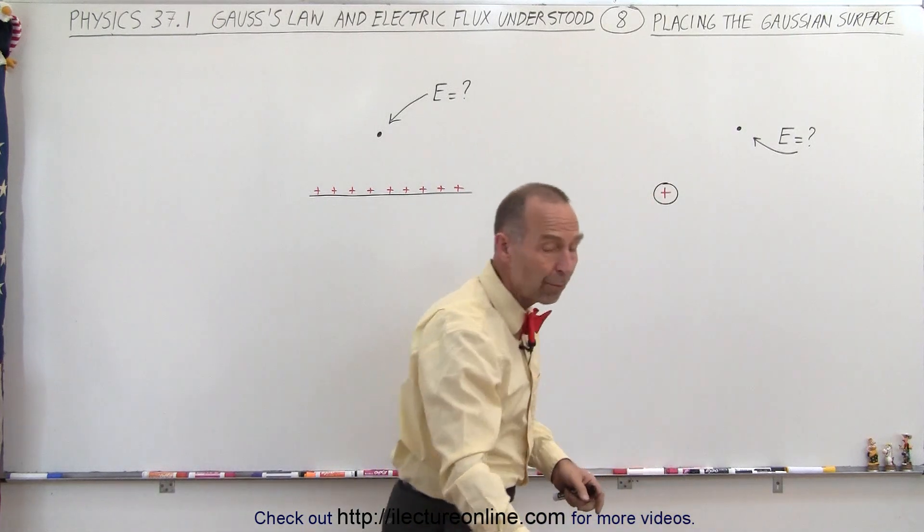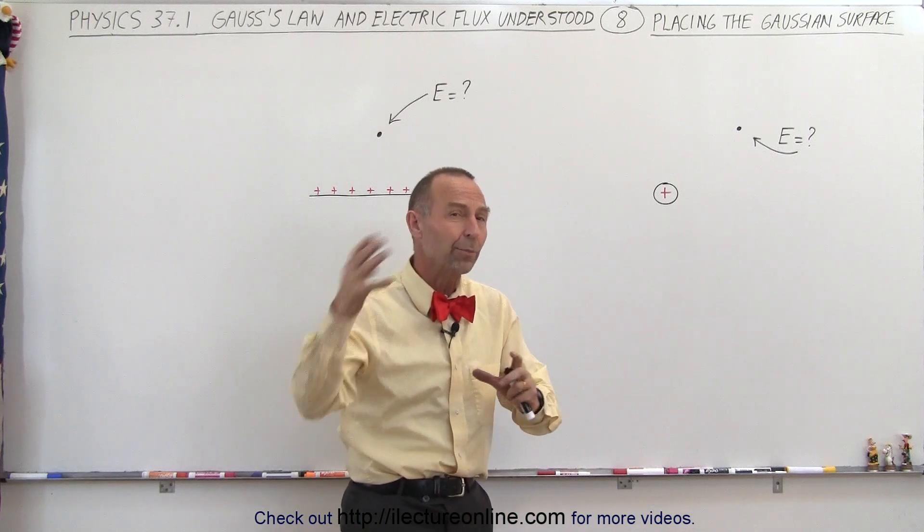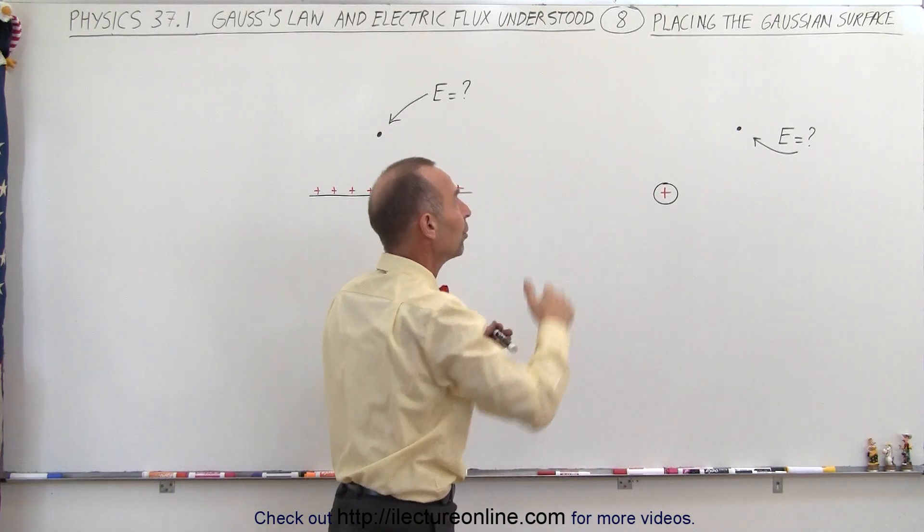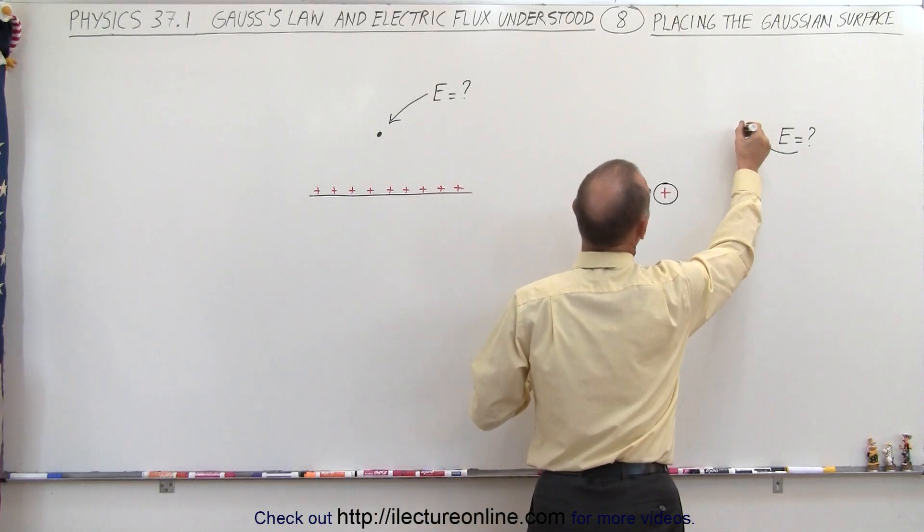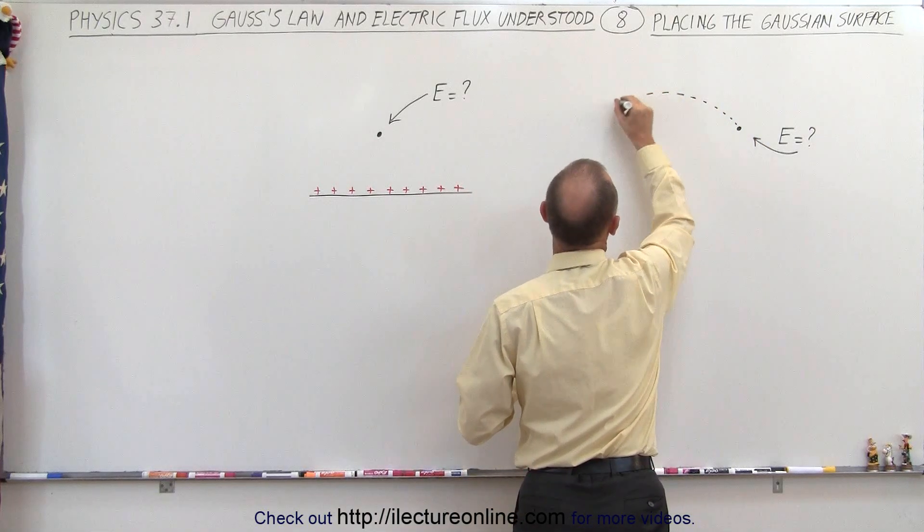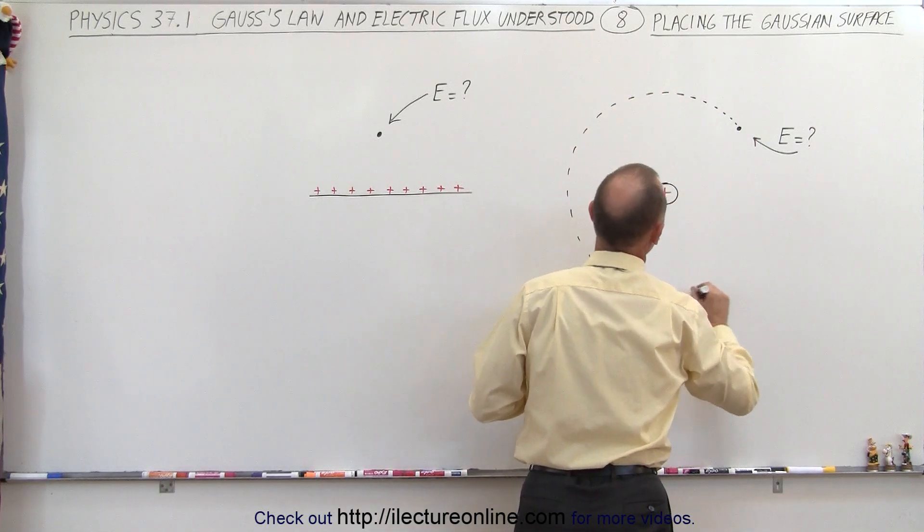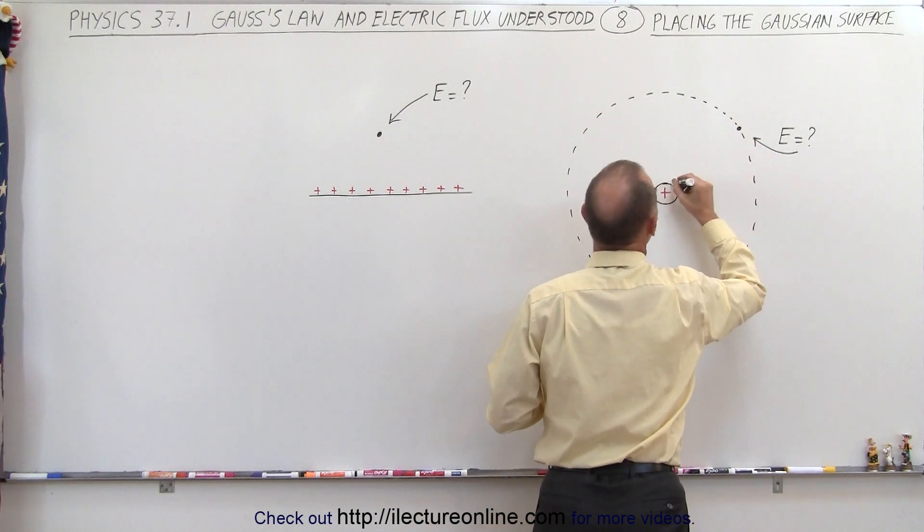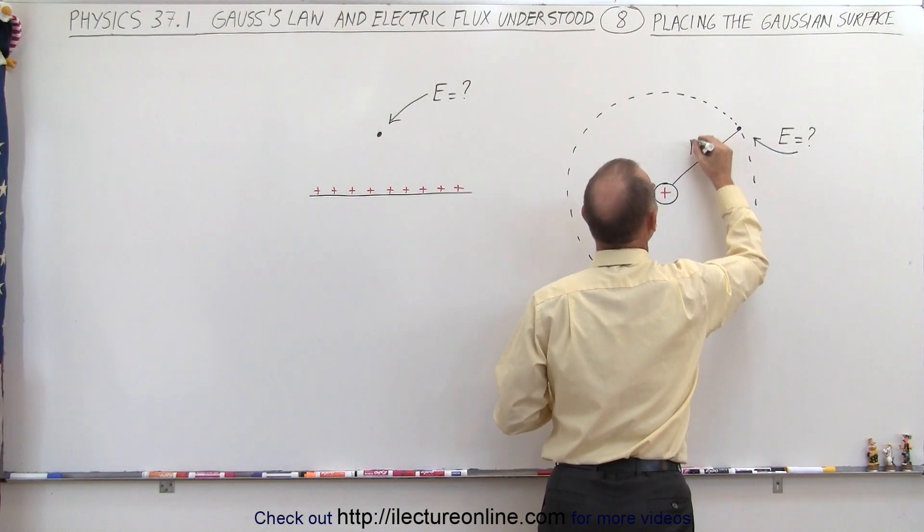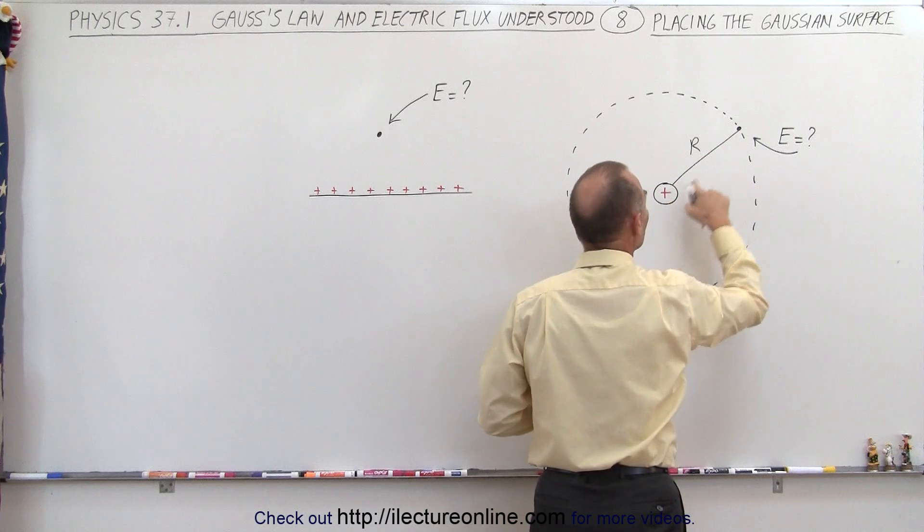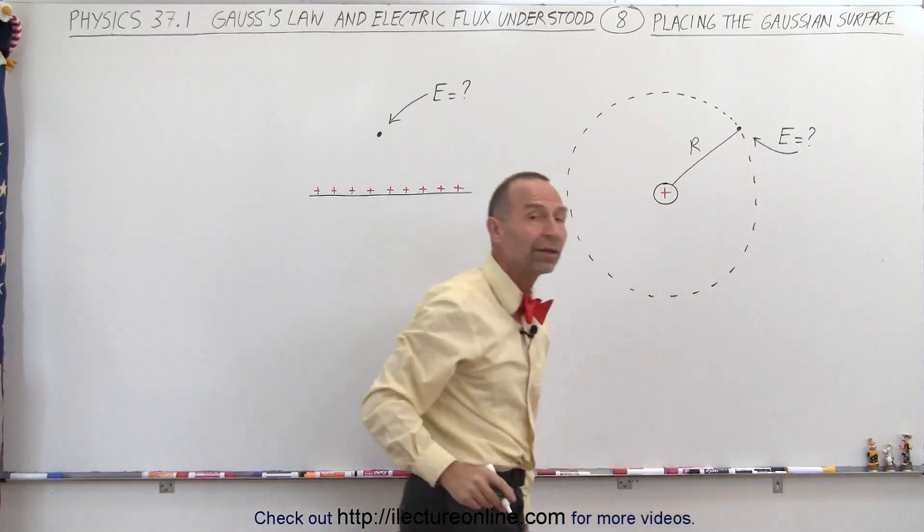The Gaussian surface must meet the three rules that we saw in the previous video, plus it must go through the point of interest. So in this case, the Gaussian surface must look like this, in such a way that the radius of the Gaussian surface is equal to the distance from the charge to the point where I want to know the electric field strength.